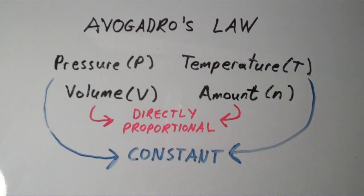What Avogadro's Law says is if the pressure and the temperature of the gas are kept constant, then the volume is directly proportional to the amount of the gas.